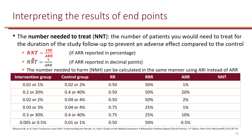The calculation is relatively simple: it's 100 divided by absolute risk reduction, as long as you're calculating absolute risk reduction in percentage. For example, if 1% of patients died in the intervention group and 2% died in the control group, the relative risk is 0.5, giving a relative risk reduction of 50%. The absolute risk reduction is 2% minus 1% = 1%, so the number needed to treat is 100 divided by 1, which is 100.